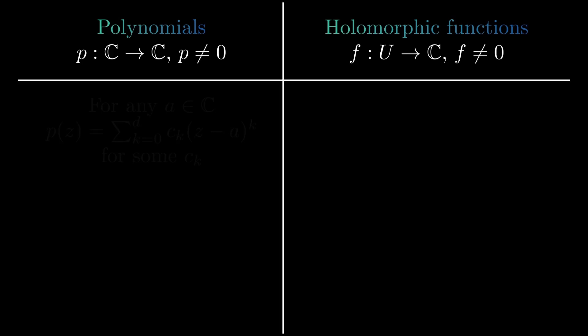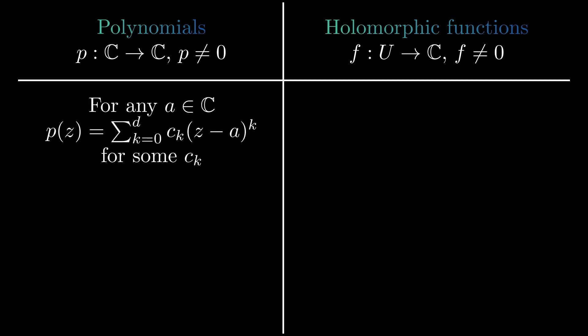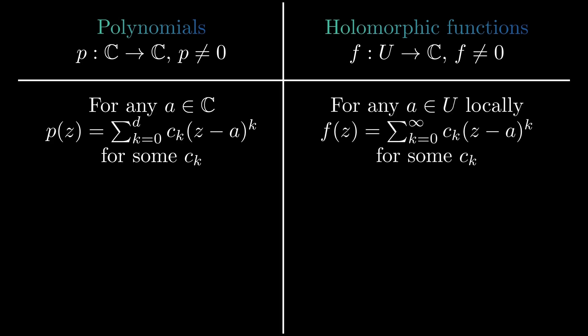The usual form in which polynomials are written is centered at the origin, but we can always find coefficients which give a form centered at any other point. For holomorphic functions, we can always locally represent them as power series. So in some neighborhood of a point a, f takes the form of a power series centered at a.